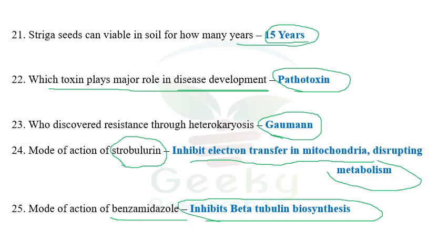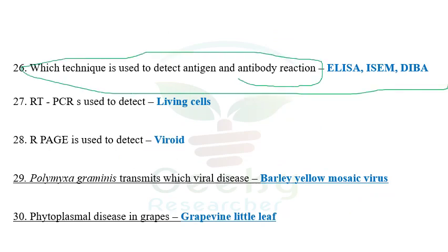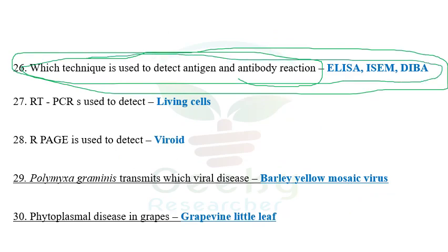The next question: which technique is used to detect antigen-antibody reactions? I don't know the answer because all the options given — ELISA, ISCM, DEBA — are all based on antigen-antibody reactions. I don't remember if they gave 'all of the above' or a specific option. It might be ELISA, but I am not sure. If you know, comment below.